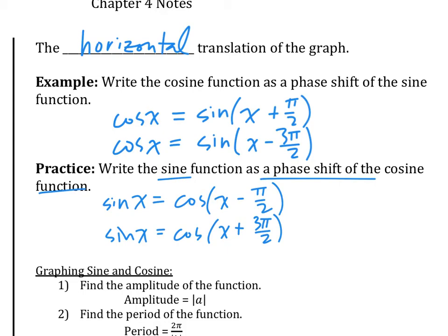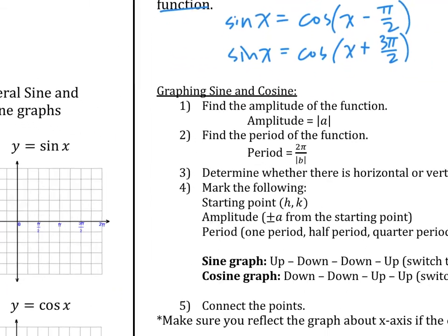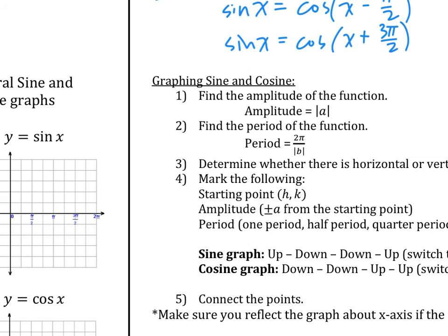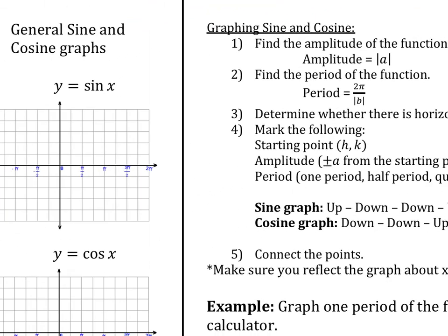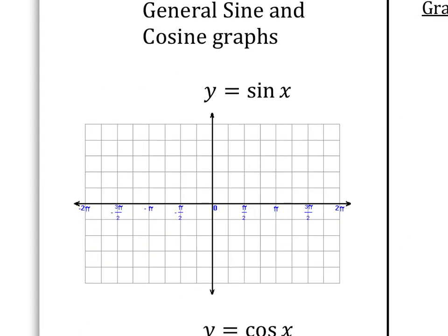We're ready to review how to graph sine and cosine. Techniques: first, find the amplitude — know how high and low it goes. Second, the period — how long it takes to repeat. Third and fourth, figure out if there's phase shift and vertical shift. For a normal sine graph: amplitude is 1, period is 2π. No h or k, so no shift.